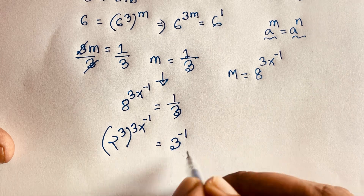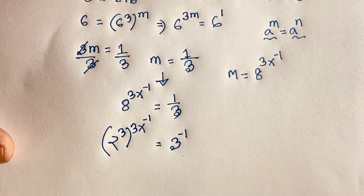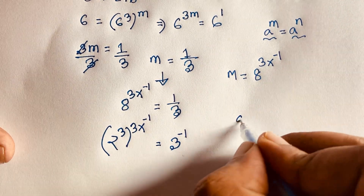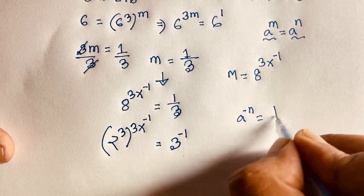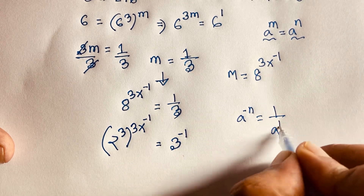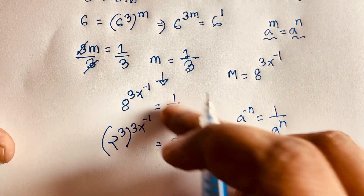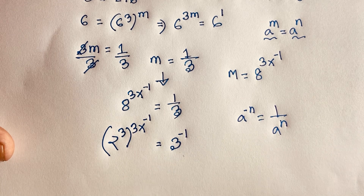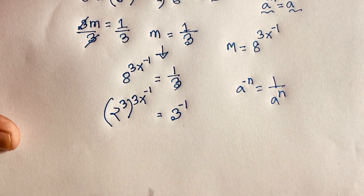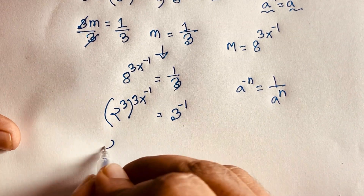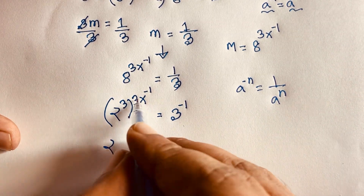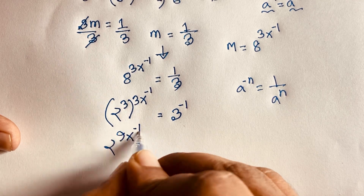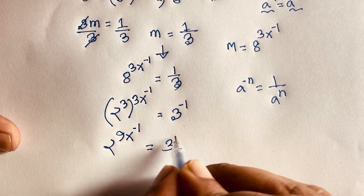According to the inverse law, 1 over a to the power n equals a to the power minus n. So 1 over 3 equals 3 to the power minus 1. Again applying exponential law: 3 times 3 equals 9, giving 2 to the power 9(3x minus 1) equals 3 to the power minus 2.